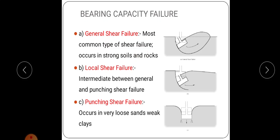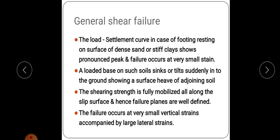General shear failure is the most common type of shear failure. Due to excessive load the soil will fail — this is the mode of general shear failure; this is the footing and this is the failed surface. Local shear failure is intermediate between general and punching. Punching shear failure occurs in very loose sand or very weak places. General shear failure usually occurs just below the ground level, local shear failure occurs at some depth below, and punching shear failure is far from the ground level.